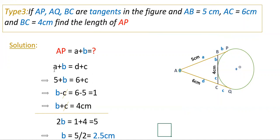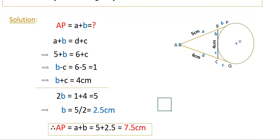Since tangent lengths are equal: A + B = D + C, so 5 + B = 6 + C, giving B - C = 1. Also, BC = B + C = 4 centimeters. Adding the two equations: B - C = 1 and B + C = 4, we get 2B = 5, so B = 2.5 centimeters. Therefore AP = A + B = 5 + 2.5 = 7.5 centimeters.